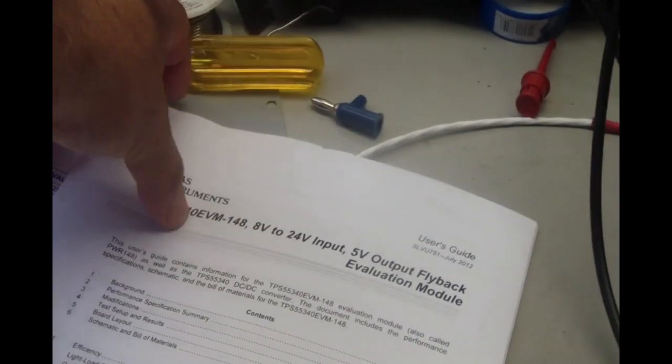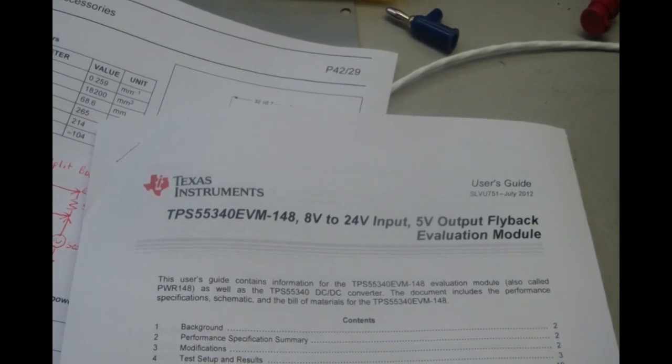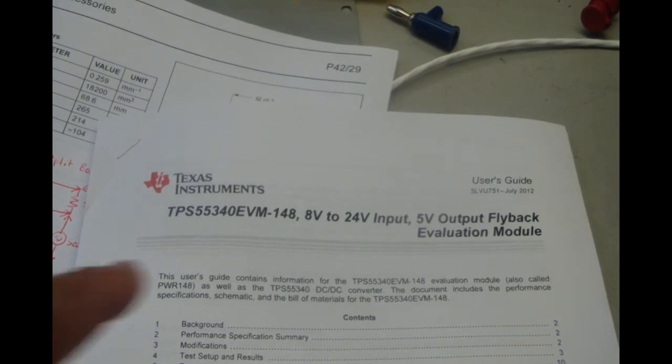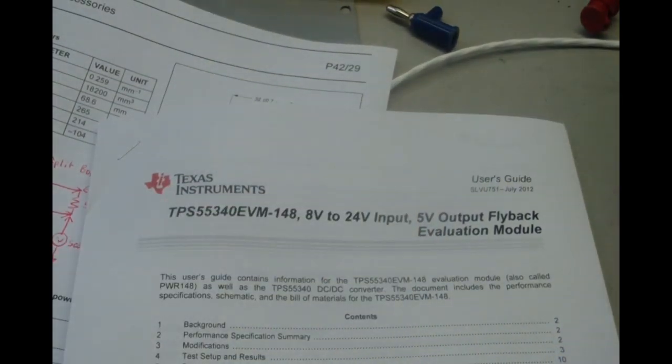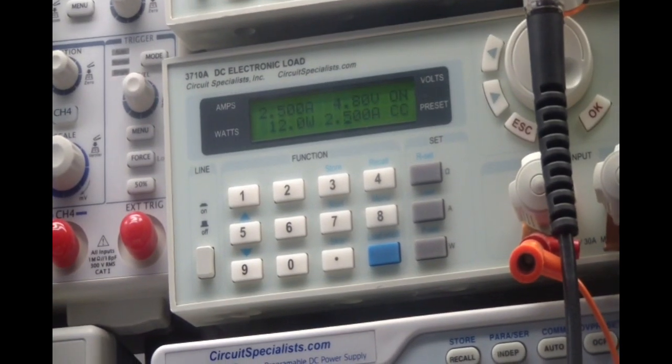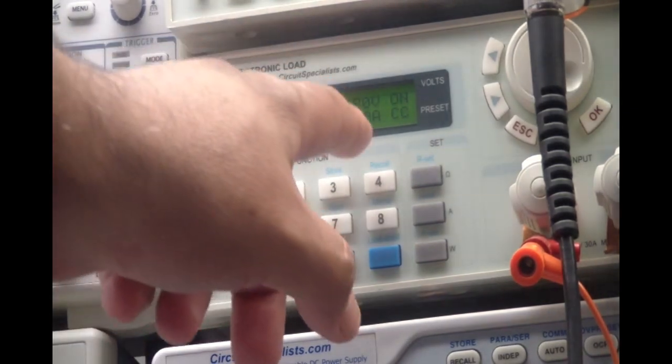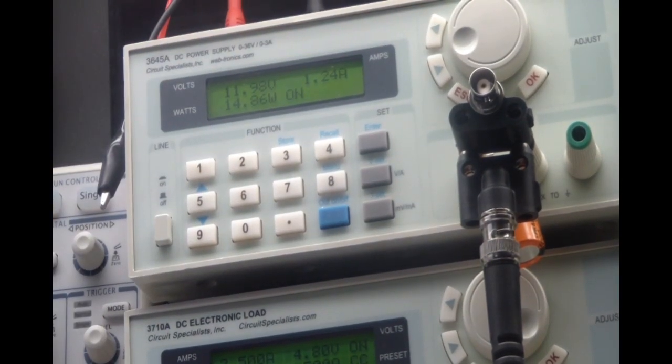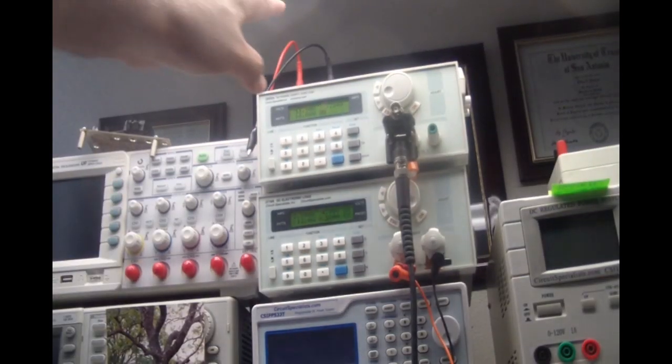Here's the power supply. This is the power supply that I used in the last video. The model number of that is the TPS55340 EVM. It's a five-volt regulator. It has an input voltage of eight to twenty-four, five volts. It can handle up to two point five amps. So on the data that they took, they used a current of two point five amps. So here I have my electronic load. I'm using two point five amps. And then I have the input at basically twelve volts.